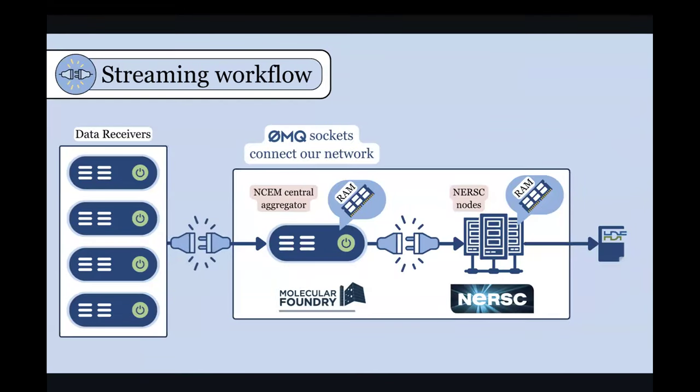And to do this, we've set up a series of ZeroMQ sockets. These connect each of these parts of our pipeline. So these data receivers are basically producer processes. They have sockets to push their data down to a centralized aggregator process. This aggregator process also runs at NSEM. And we have to do this because these guys aren't connected to NERSC in any way. We have to find some way to get them to a central point and then fan them out to NERSC.